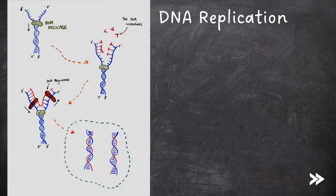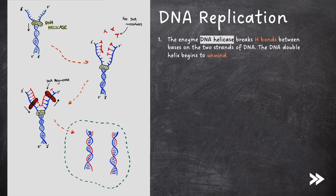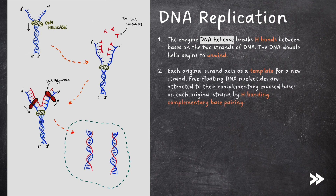So how does DNA replication actually work? You'll need to be able to describe this in an exam. First of all, the enzyme DNA helicase breaks hydrogen bonds between bases on the two strands of DNA, and the DNA double helix begins to unwind. Next, each original strand acts as a template for a new strand. Free-floating DNA nucleotides are attracted to their complementary exposed bases on each original strand by hydrogen bonding. This is known as complementary base pairing.